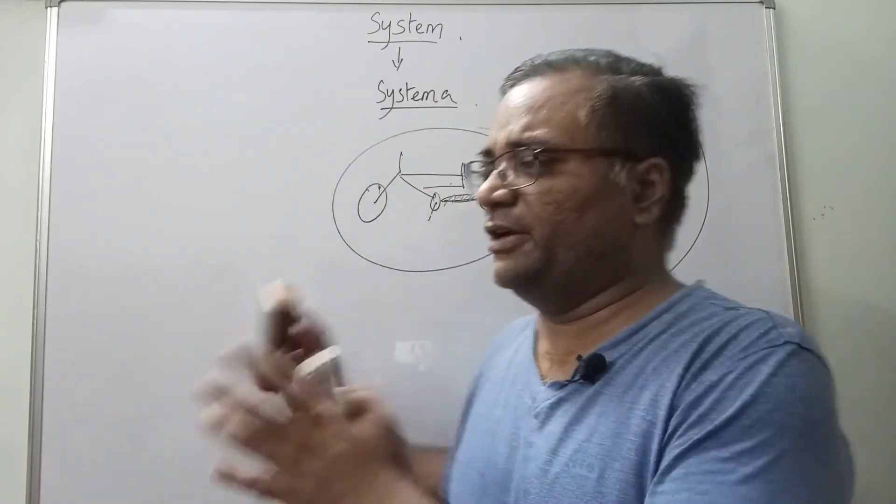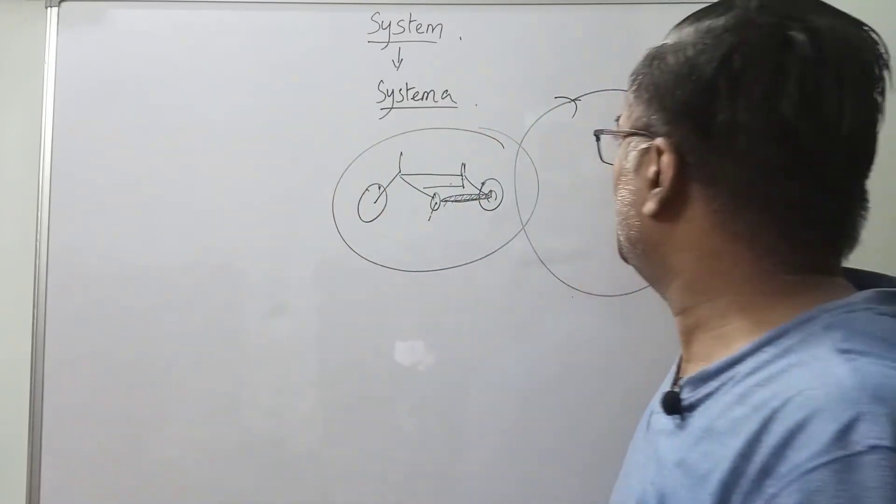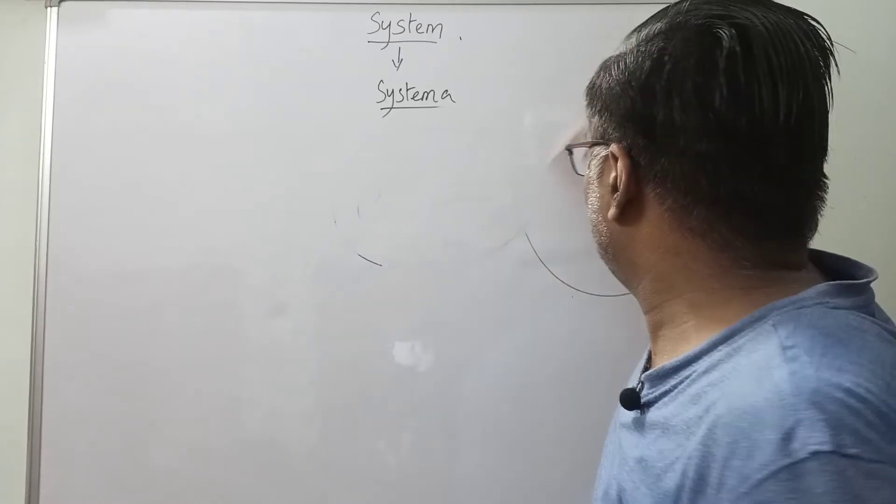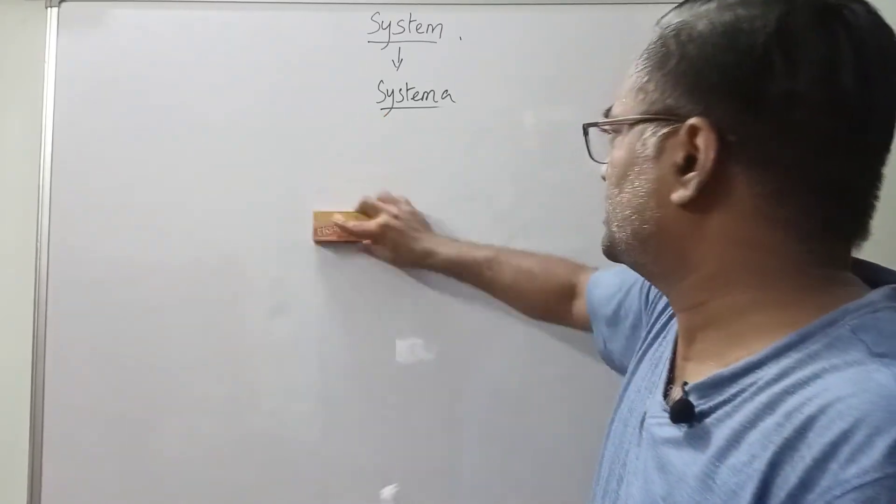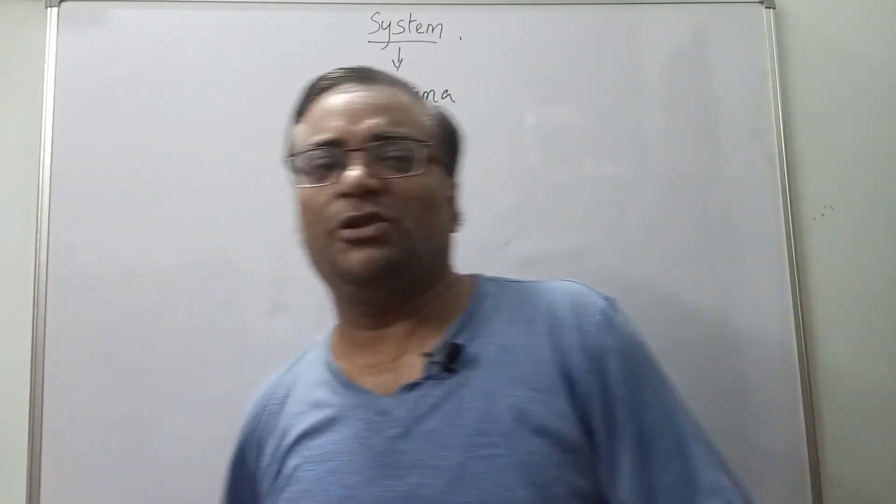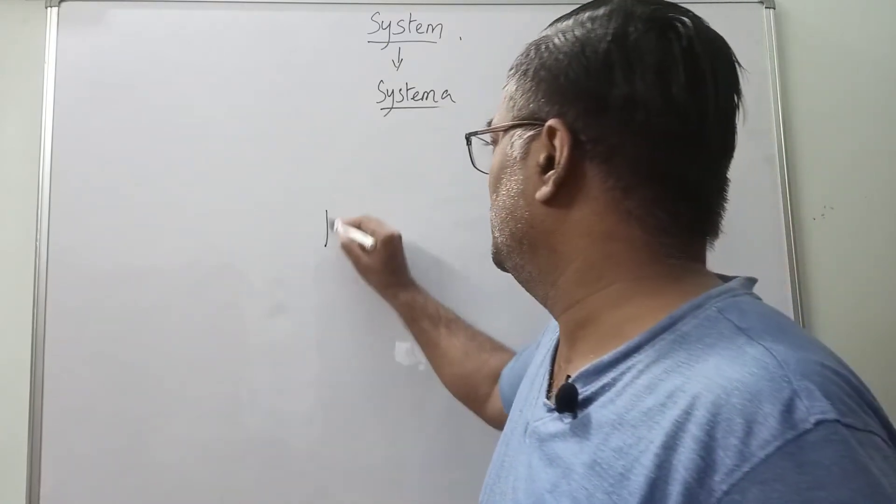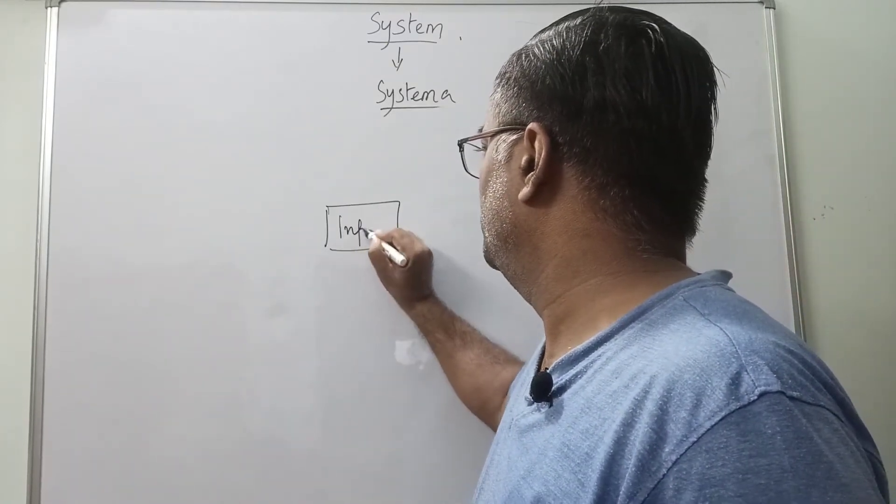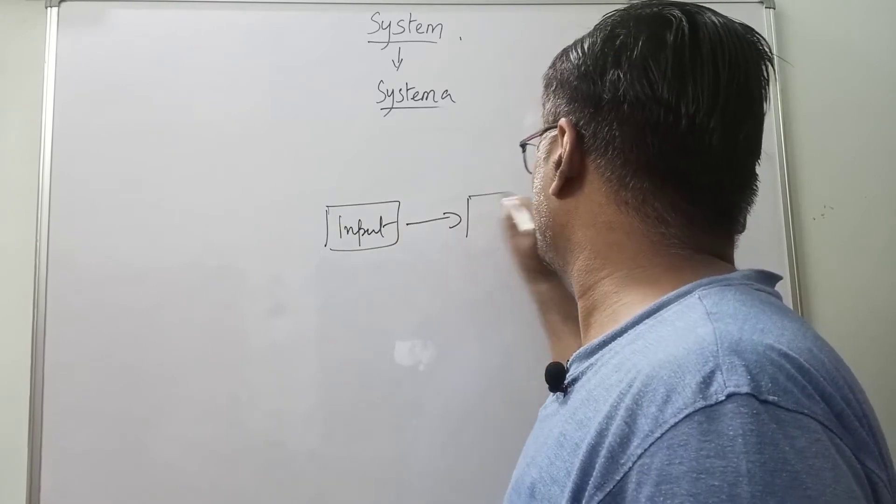Now coming back to the book, this is a general view of what a system is. If we go from general terms to a bit more scientific, then we say a system has three parts: one is input, one is process, and one is output.